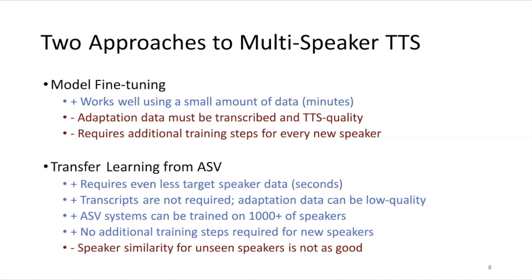A different approach is transfer learning from ASV, which is automatic speaker verification. In this approach, you require even less target speaker data — it can work well with just a few seconds. Transcribed data is not required, and the adaptation data can be low quality; it doesn't have to be TTS-level high quality recording conditions. Basically, you use a separately trained ASV system that can be trained on thousands of speakers, giving a really nice representation of the speaker space, with no additional training steps required for TTS for new speakers. However, we have found that speaker similarity for unseen speakers is not as good as for speakers seen in the training data.